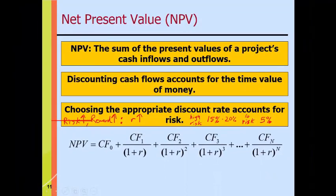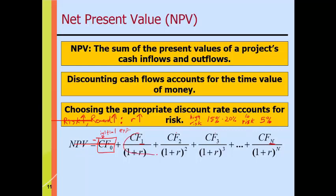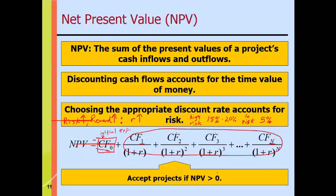NPV is simply the sum of the present values of all cash flows from period 1 through N — the cash flow in year one, two, three, through year N — plus the initial outlay, which will often be subtracted because it's typically a negative cash flow. The decision rule: accept projects if NPV is greater than zero, meaning the sum of all future cash inflows exceeds the initial cost and the project generates a return.